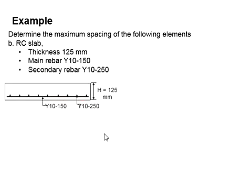Next, let's try another example for an RC slab. The thickness is 125 mm with main reinforcement bar Y10-150 and secondary reinforcement bar Y10-250. You may pause the video to work out the solution.